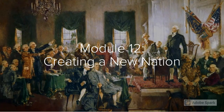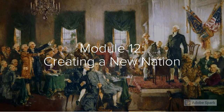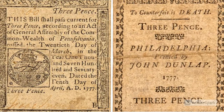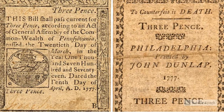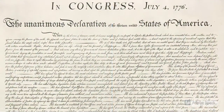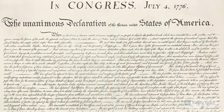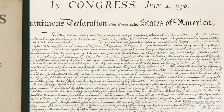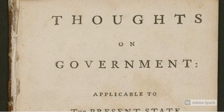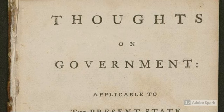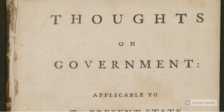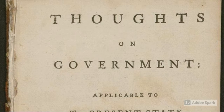Welcome to Module 12, Creating a New Nation. In this module, we'll examine the changes brought to politics, economics, and society by the American Revolution. How would the United States decide to represent its people and structure its government? What was the relationship between elected representatives and the people? How did the American consciousness we started to explore in Module 11 translate into a national identity?